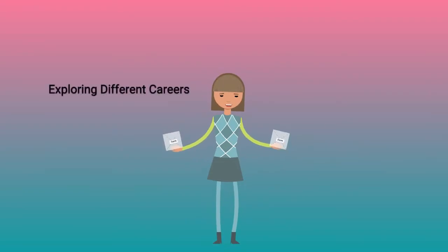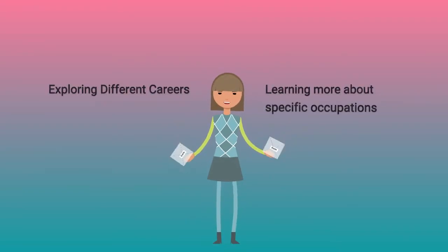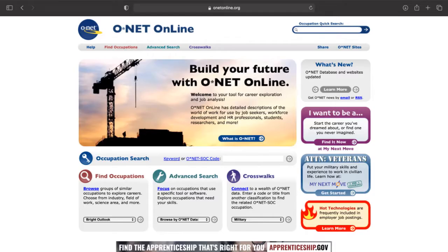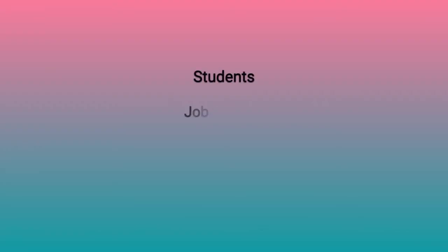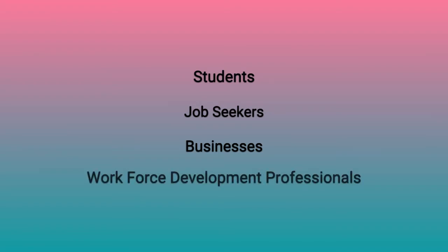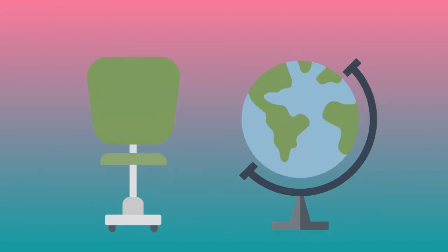Interested in exploring different careers and learning more about specific occupations in the field you're interested in? ONET Online is a free online database that contains hundreds of occupational definitions to help students, job seekers, businesses, and workforce development professionals to understand today's world of work in the United States.